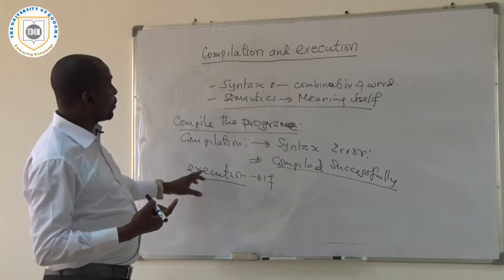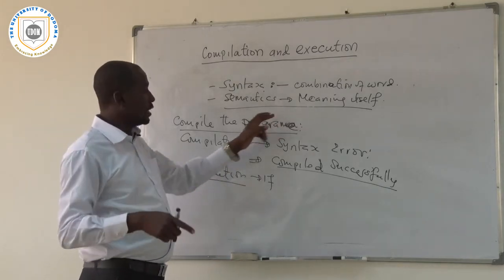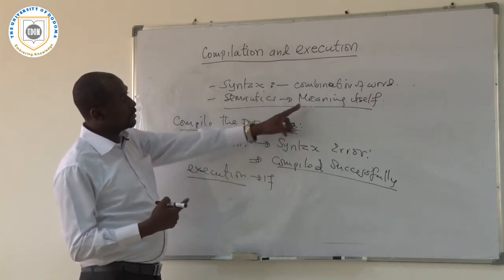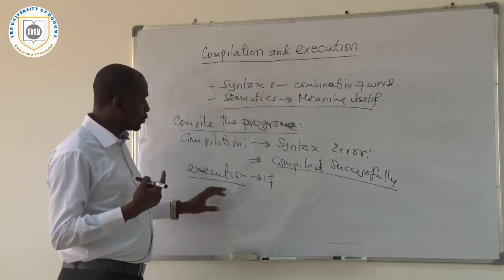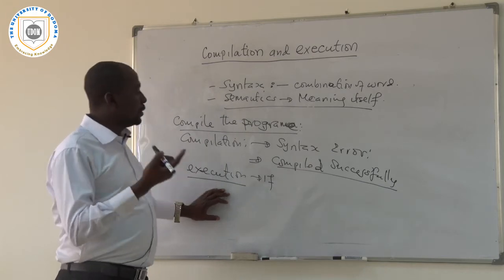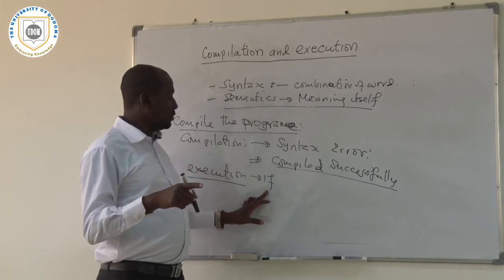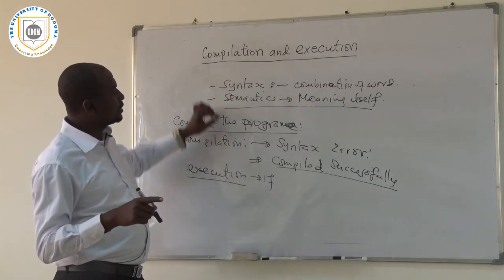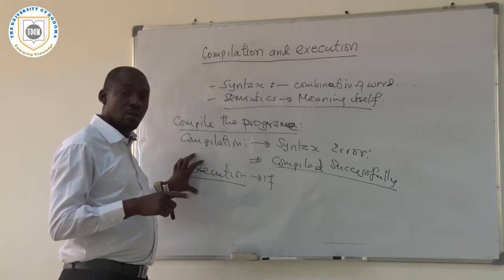If your program compiled successfully — meaning there is no syntax error — but during execution, during checking the semantics and the meaning of that program, it gives you the output you didn't expect, then it means that your program has a semantics error. Means it is not a correct program. The program can be syntactically right but semantically wrong.